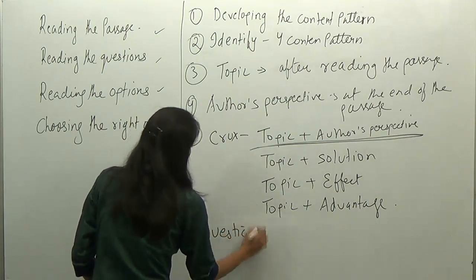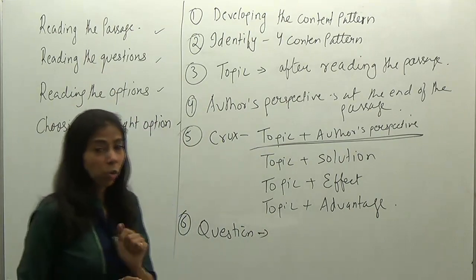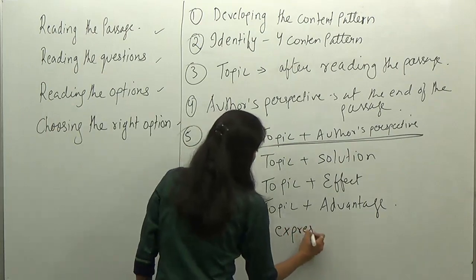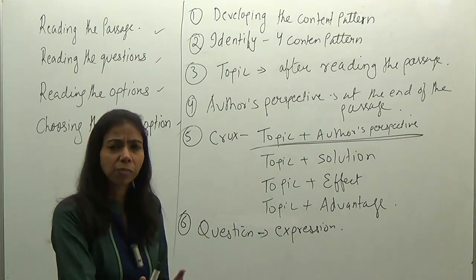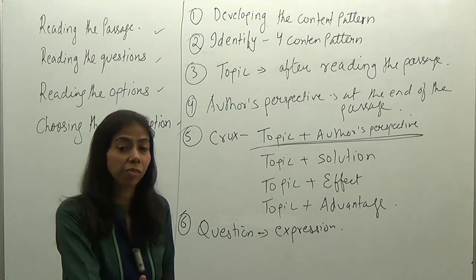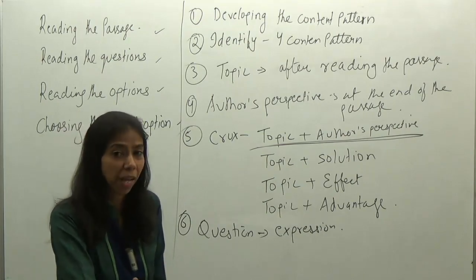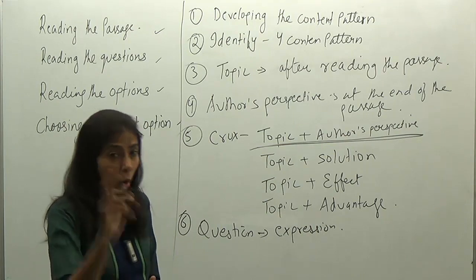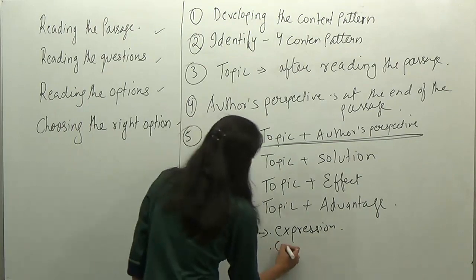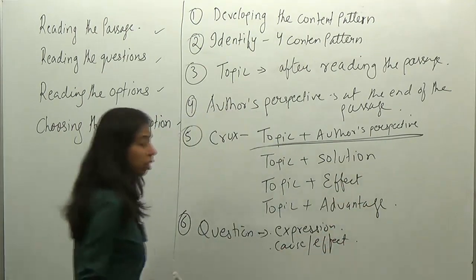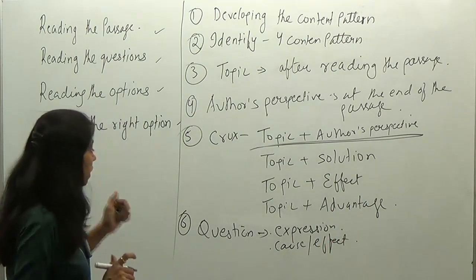Then we come to questions. After reading the passage, you will read the questions. Don't just read — notice the expressions used in the questions. We have already dealt with these: expressions like 'according to the passage,' 'in the context of the passage,' 'with reference to the passage.' The third type is a high-intensity expression using words like 'most,' 'main,' 'best,' 'nearest,' 'closest,' or 'quoted lines.' Understand the expression, then understand the question — whether it is asking about cause or effect. You must understand the question well; otherwise you won't be able to answer accurately. These are the six steps you need to follow.